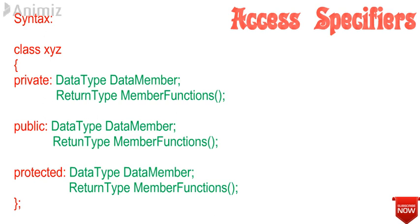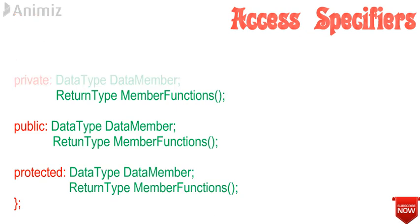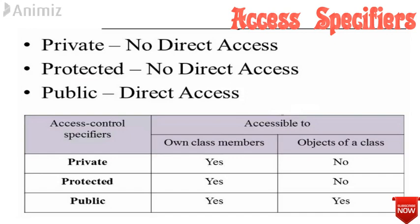We can define both data members and member functions under a single category or separately. Check this table where it clearly shows how data is accessed using private, public, and protected. If you are defining data members and member functions under public access specifiers, they can be accessed from anywhere — inside or outside the class. In case you are declaring data members and member functions under private, they can be accessed only by that class member; they cannot be accessed outside the class.